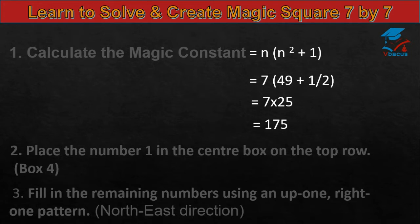First of all, we have to calculate the magic constant. Magic constant is equal to n times n squared plus 1. Here n is 7. 7 times 7, 49 plus 1, it should be divided by 2. So if you divide 50 by 2, it will become 25. Multiply 25 by 7, that is 175. So Magic Squares 7x7, the magic constant is 175.